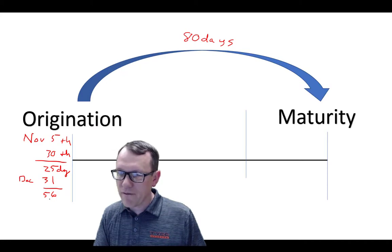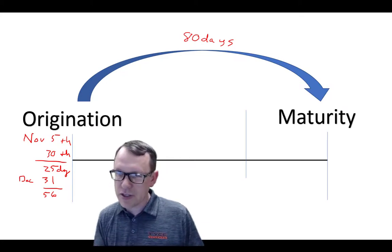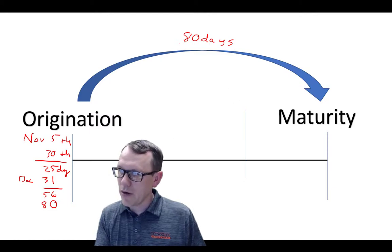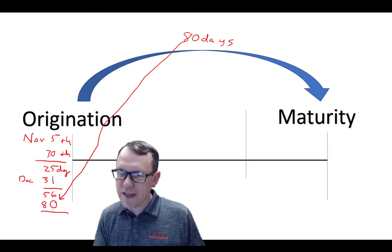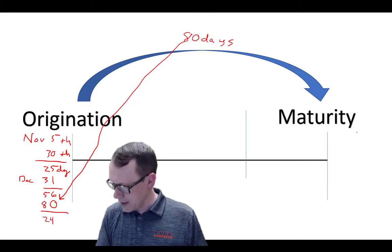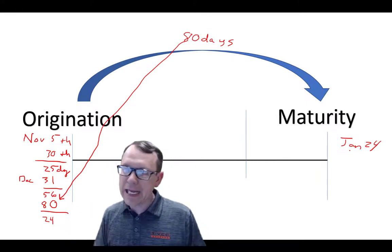December is going to have 31 days, so total together that's going to be 56 days. So we have 56 days through the end of December. We know January is going to be 31 days. We're not going to use all those days in January because that's going to be way too much, more than 80. So we know there's 80 days total, and we subtract to find the difference, which is 24. So we've got 24 more days in January. January 24th is the maturity date, 80 days after November 5th.